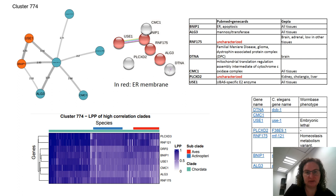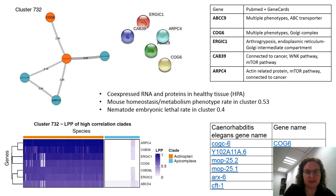Another cluster shows many genes from the endoplasmic reticulum, marked in red, along with two uncharacterized genes and some genes known to be connected to the ER. This cluster shows a strong signal in both Aves, Actinopterygii, and Chordata. Finally, another cluster shows genes not connected in STRING, but they are co-expressed, show very similar phenotypes in mouse and nematode, and display a nice co-evolution signal in both Actinopterygii and Apicomplexa.